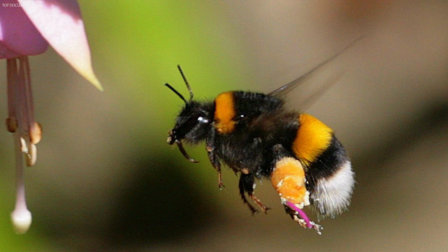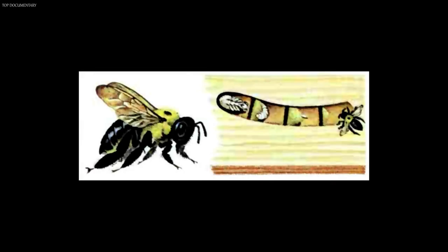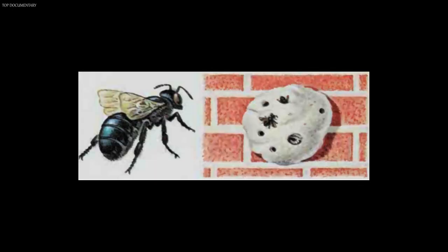Solitary bees live alone, but sometimes thousands of solitary bees gather in a small area and build their nests close together. There are no workers among the solitary bees. Each female is like a queen that does her own work: she builds her own nest, stores pollen and nectar in it, lays an egg on the pollen in each of the cells, seals the nest, and flies away. When the eggs hatch, the larvae eat the stored food. The most important kinds of solitary bees are the carpenter, leaf-cutting, miner, mason, and cuckoo bees.